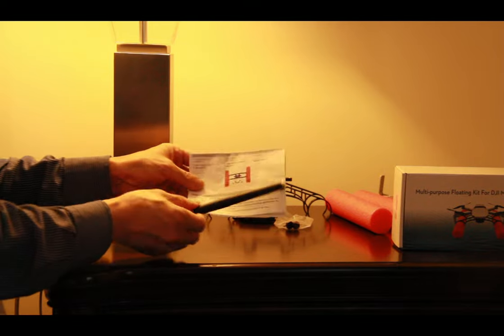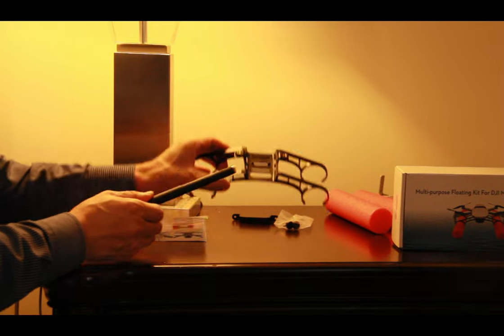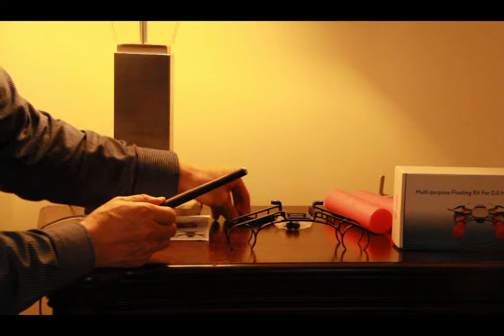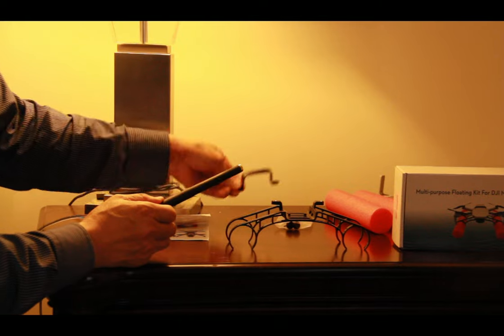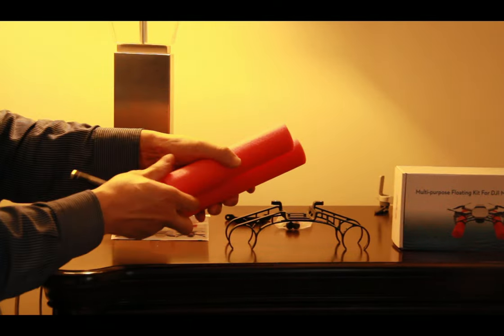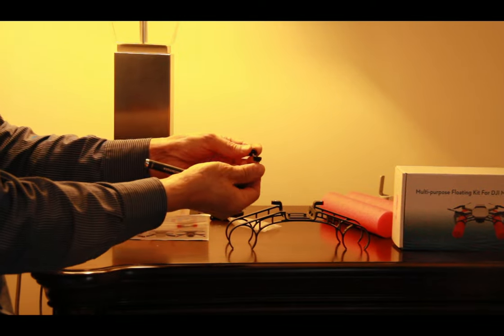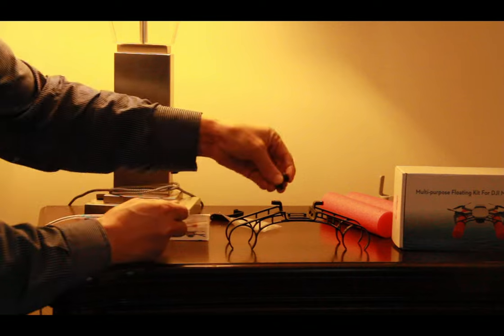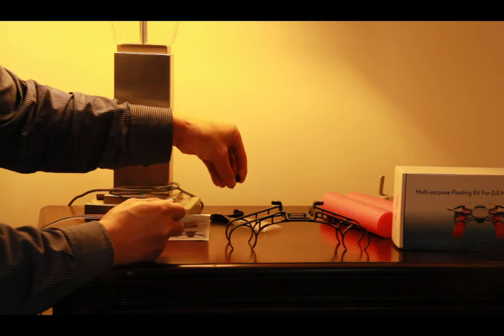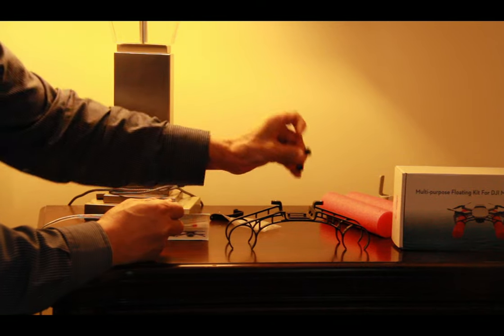So this is the instruction manual, and this is the main mount holder. This is the main mount top cover, and these two are spun sticks. And this is the screw for the main mount holder and main mount top cover, two screws.